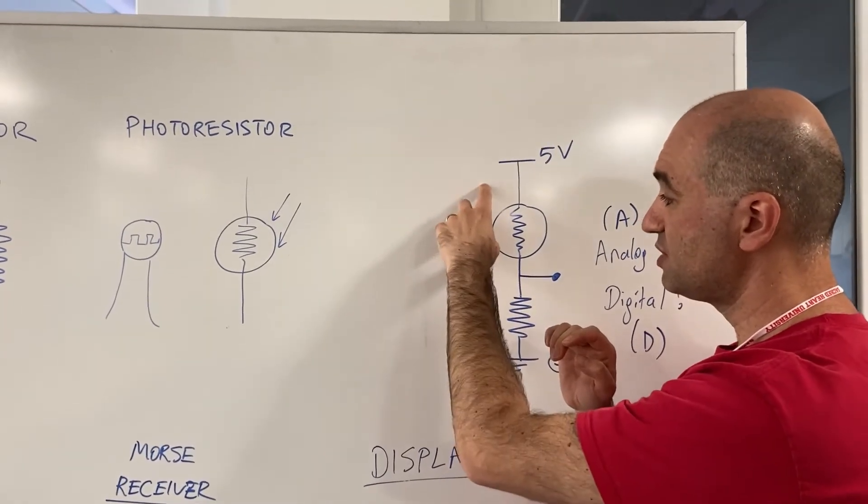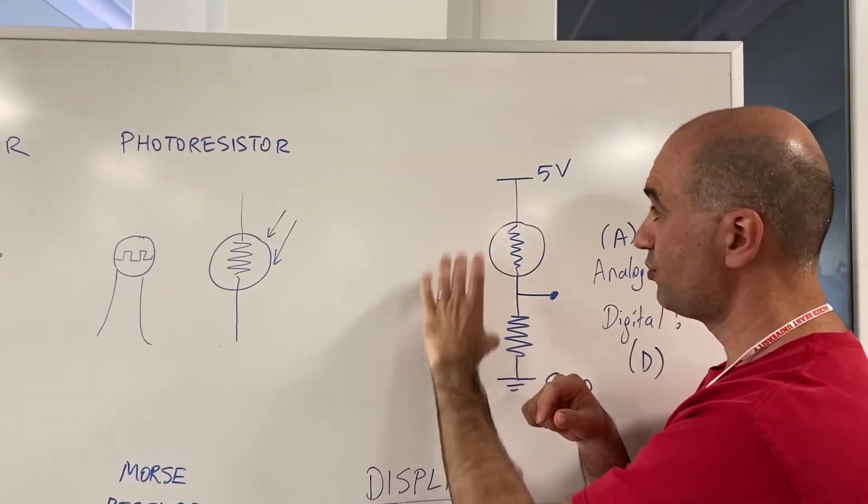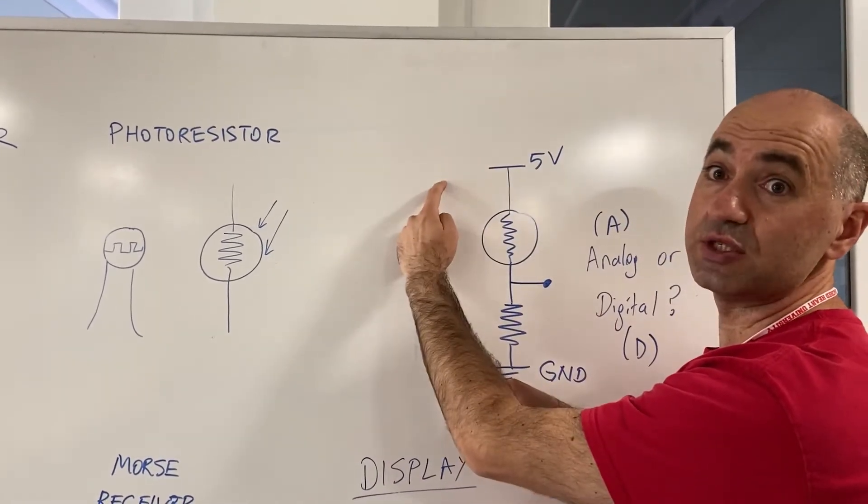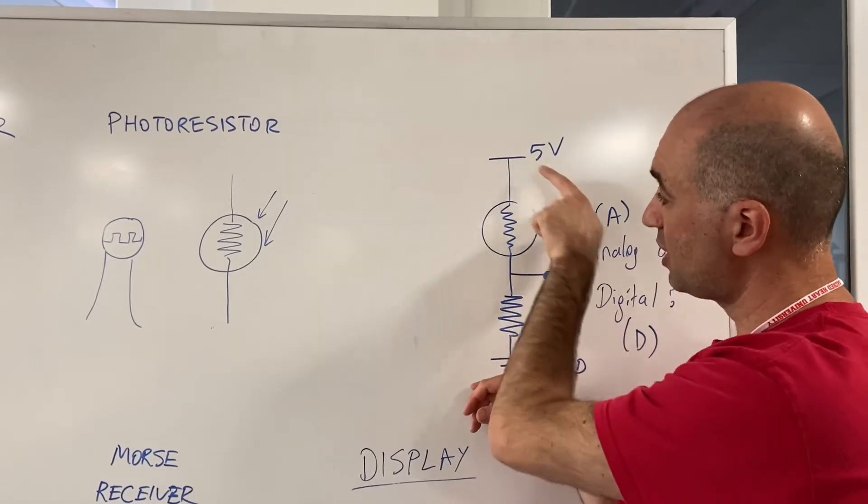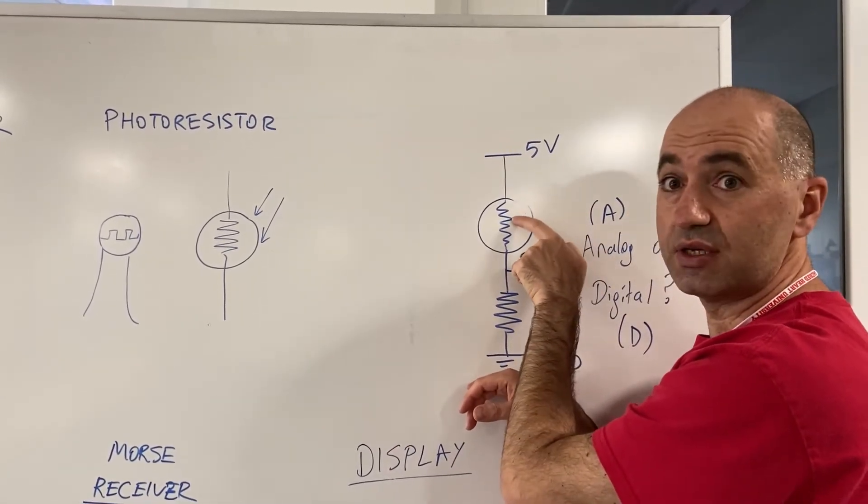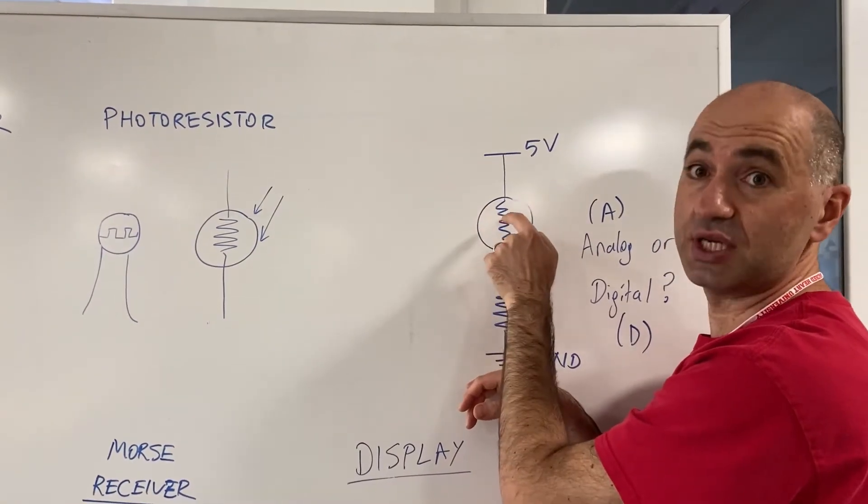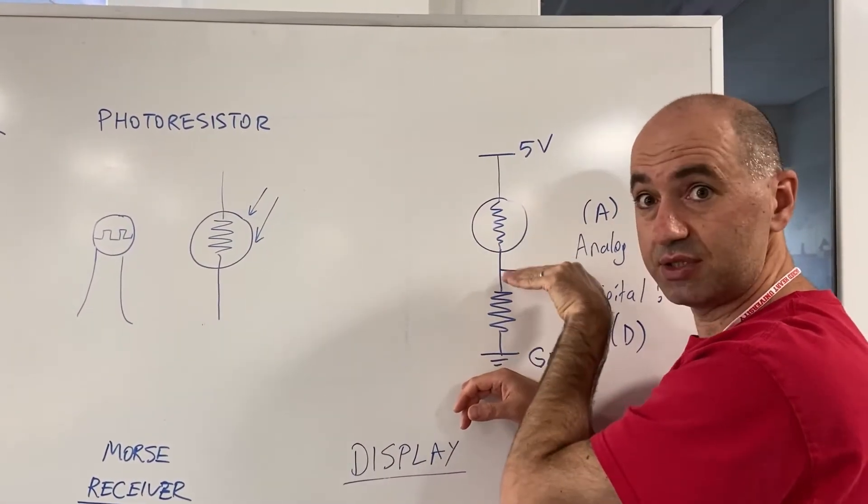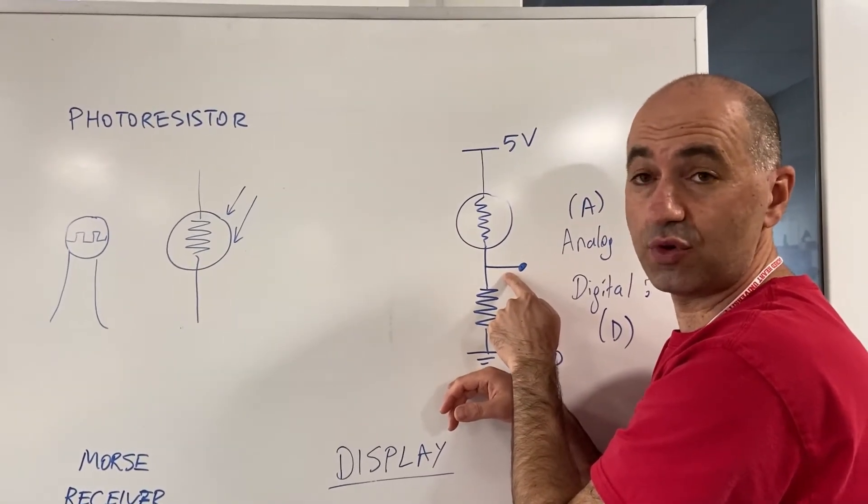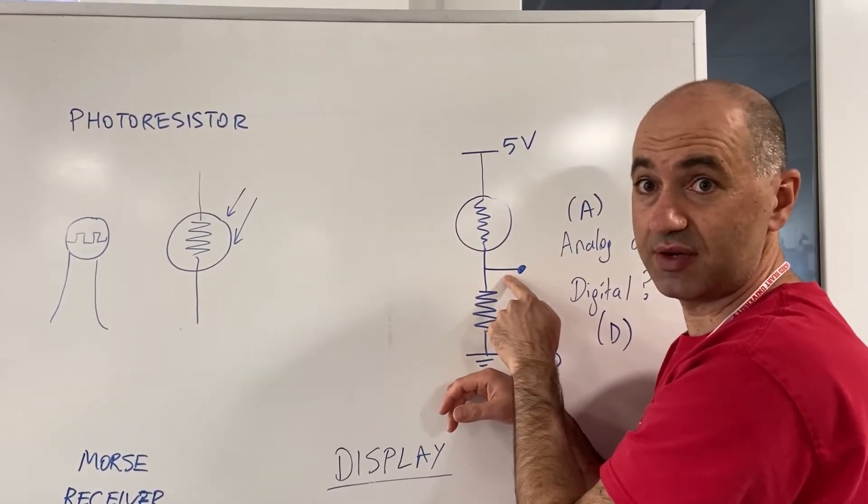Depending on the value of this resistance and this resistance, they have some voltage out of this five volts. We call this a voltage divider. The voltage here is between zero and five volts, and that changes based on how much light this gets because it changes its resistance and this value changes. So we have a voltage here - it can be two volts, three volts, five volts, four volts, somewhere between zero volts and five volts.